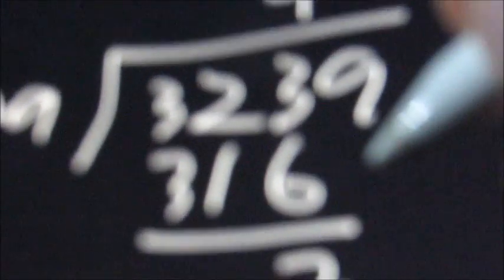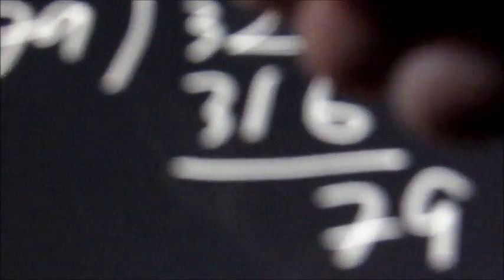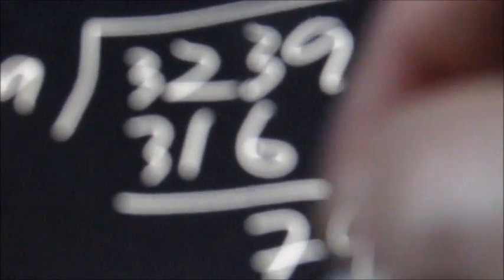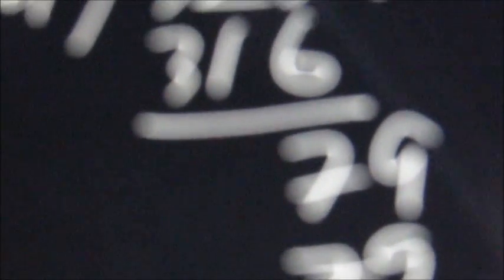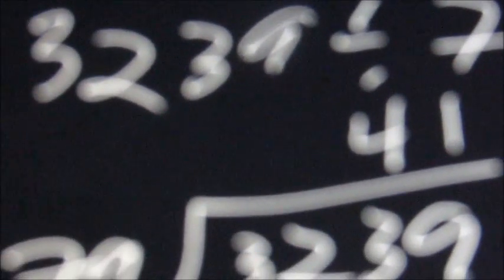Now bring down the 9. 79 will go into 79 one time. 1 times 79 is 79 with 0 remaining. When you subtract, this number needs to be smaller than whatever you're dividing into the main number, which it was. It was only 7. But if we got something like 80, then we would have needed this number to be bigger.